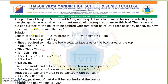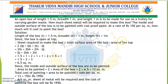Next question: There is an open box of length 1.5 m, breadth 1 m, height 1 m, to be made for a trolley for carrying garden waste. How much sheet will be required? Since the box is open at the top, sheet required = total surface area minus the area of the top.